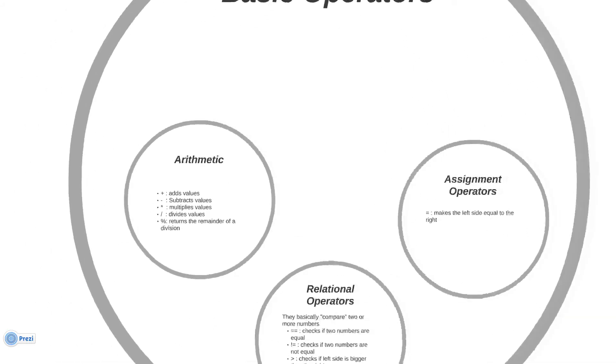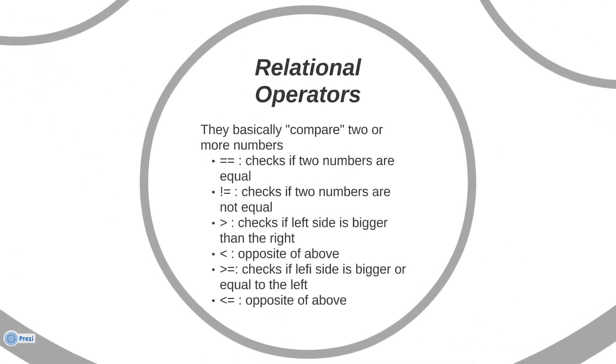Okay, let's go to relational operators. Relational operators basically compare numbers. Equals, two equal signs, check if two numbers are equal. You can't do A equals B because what will happen is it will make B equal to A. One equals is an assignment operator which I will explain later.